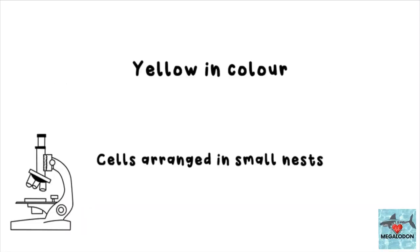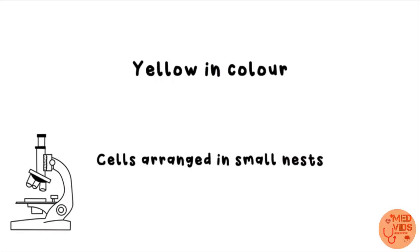On dissection of the specimen and gross examination, you can see that the tumor is yellow in color. On microscopy and histopathology, the cells are arranged in a specific pattern of small nests.